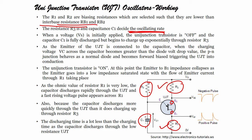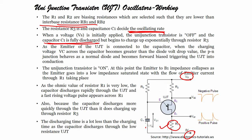When a voltage Vs is initially applied, the unijunction transistor is off and the capacitor C1 is fully discharged. The UJT cannot operate. But C1 begins to charge up exponentially through resistor R3 — the emitter of the UJT is connected to the capacitor.